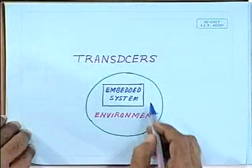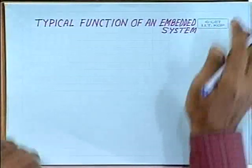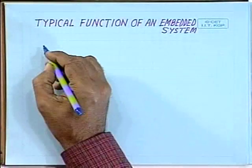On the other hand, whenever a microcontroller-based system — known as an embedded system — is interacting with the environment, what do you really need? What kind of input-output devices do you require for that purpose? Let us try to understand the typical function of an embedded system.